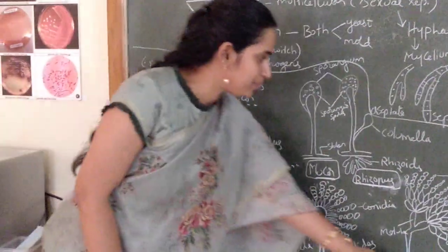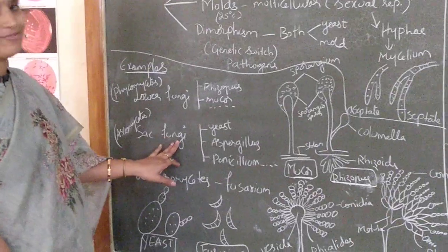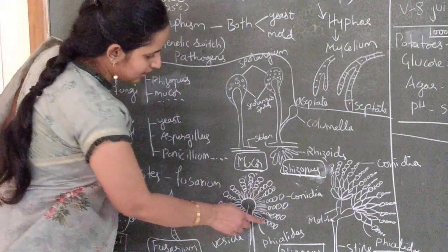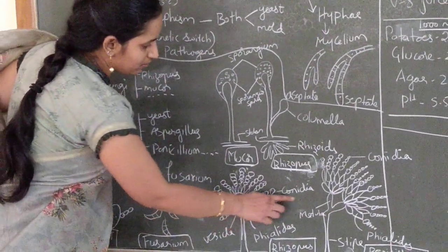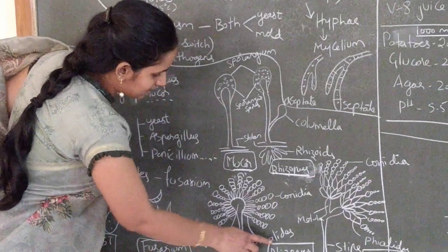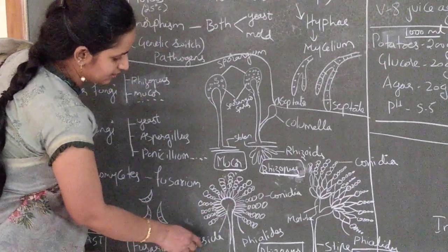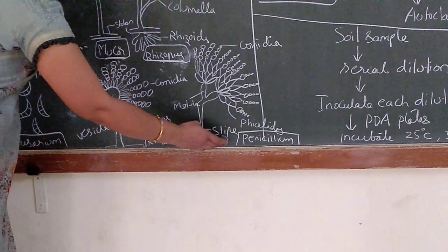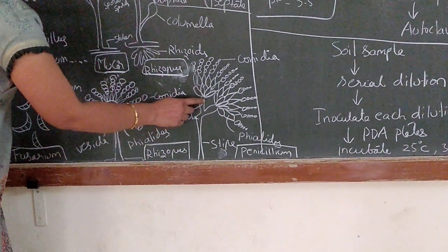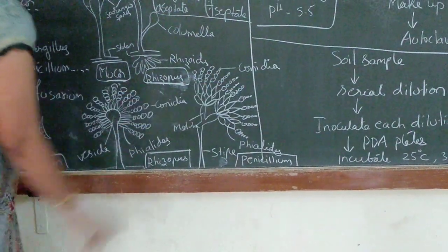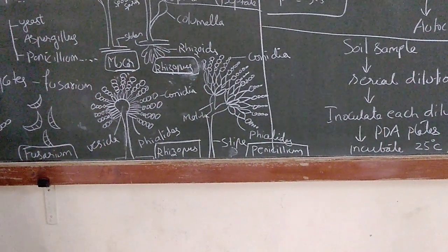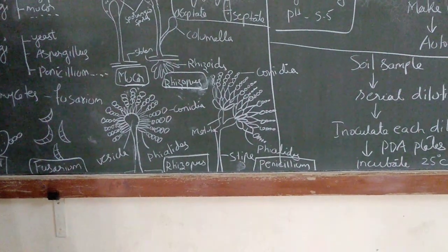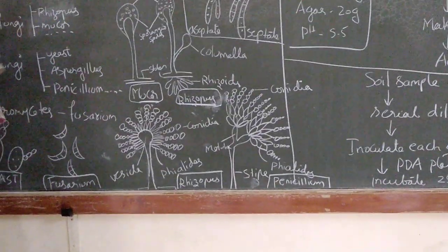Coming to Aspergillus and Penicillium, which come under sac fungi: Aspergillus is made up of conidia instead of sporangiophores; it will have conidia, phialides, and vesicle. The central part is known as the vesicle, a stem-like structure on which the conidia are formed. Coming to Penicillium, the same structure — stipe, metula, and conidia at the tip. The basic difference is that the Penicillium structure looks like a brush or painting brush when observed under the microscope.